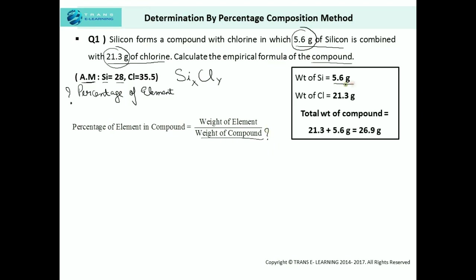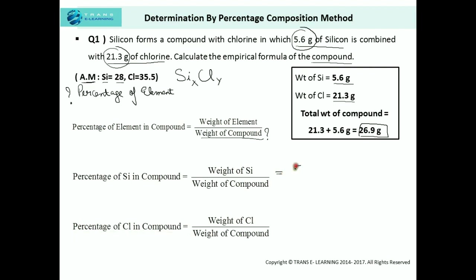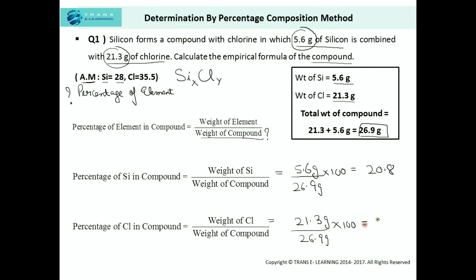Weight of silicon is 5.6 grams and chlorine is 21.3 grams. Adding these two gives us 26.9 grams — this is the weight of the compound. Now we can find the percentage of silicon: 5.6 divided by 26.9 times 100, which comes out to be 20.8%. Whereas the percentage of chlorine is 21.3 divided by 26.9 times 100, which comes out to be 79.2%.